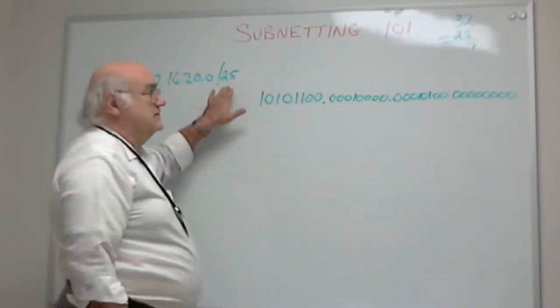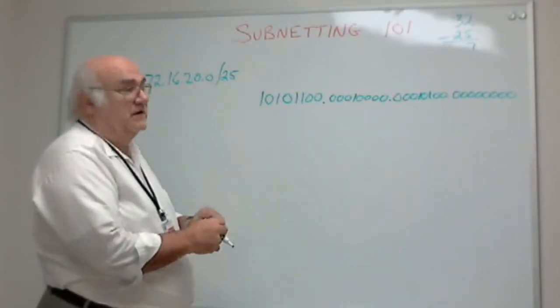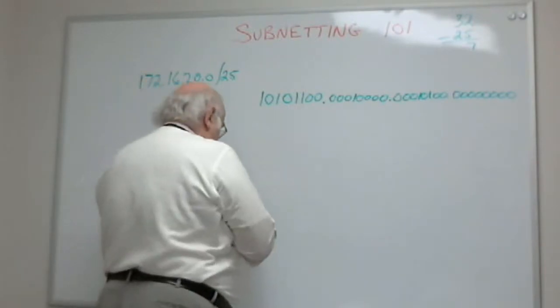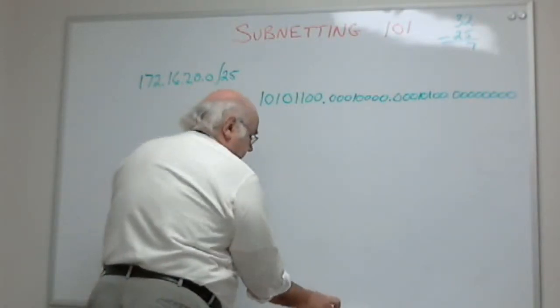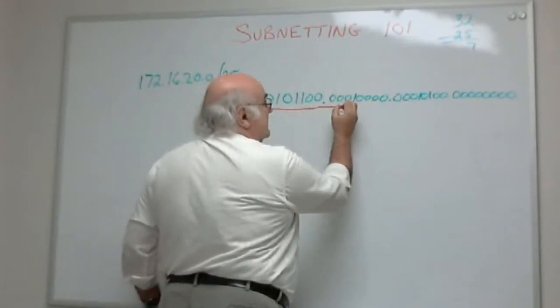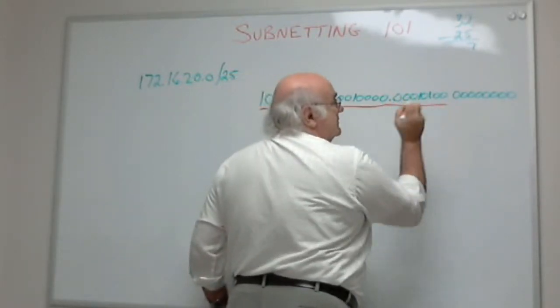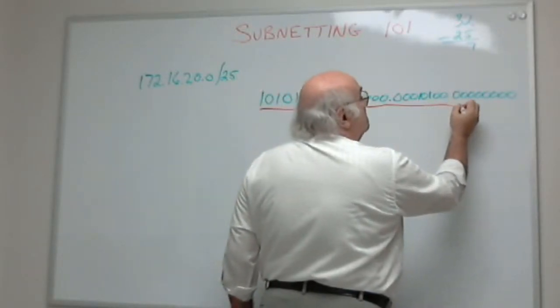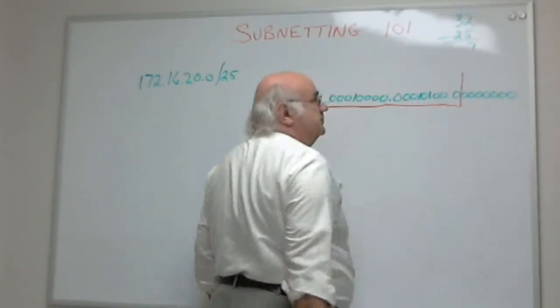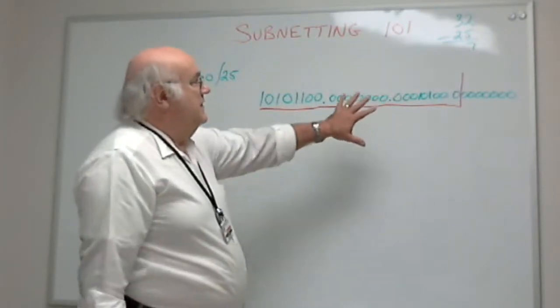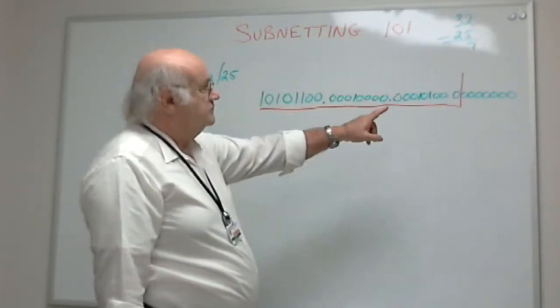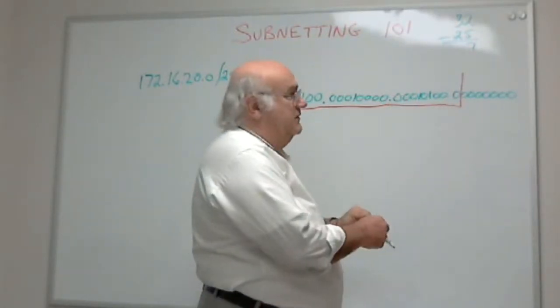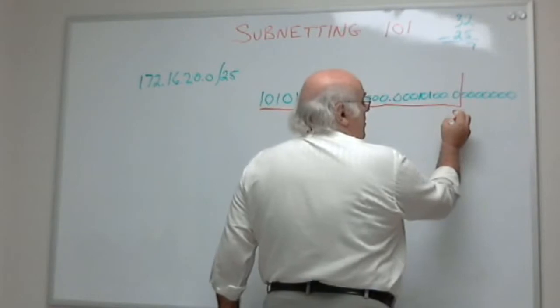Now, remember, I have a slash 25 for my prefix. That means I'm taking 25 bits for my network. So what am I going to take for my network? I'm going to take these eight bits, these eight bits, these eight bits. That's 24. And then I'm also going to take one bit out of that byte. This is my network. The importance of that bit right there is that it can either be a zero or a one.